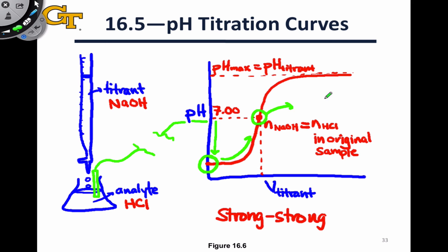And probably most importantly for a strong-strong titration, we can identify the moles of HCl and the concentration of HCl in the analyte by simply applying ideas from solution stoichiometry and the fact that at this equivalence point, at this point on the titration curve, the moles of hydroxide added is equal to the moles of HCl in the original sample. This is what we call the equivalence point.